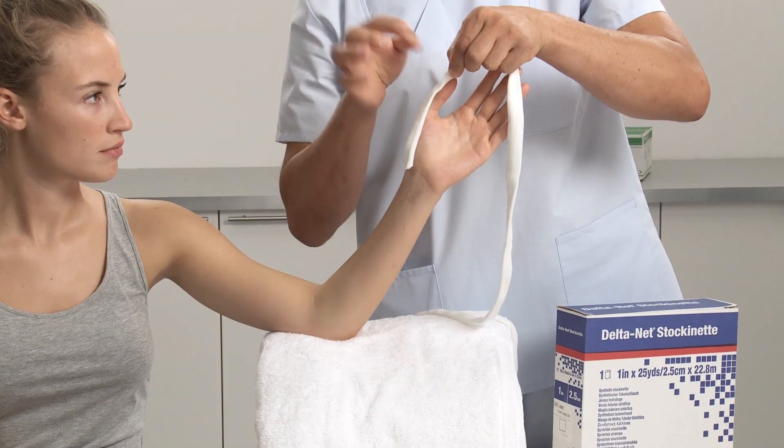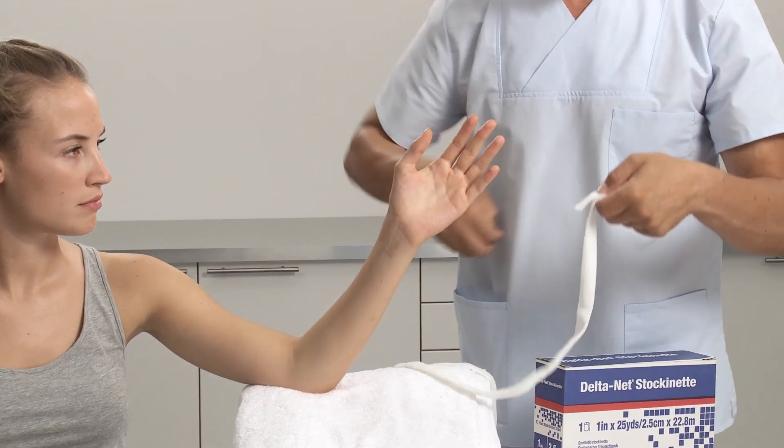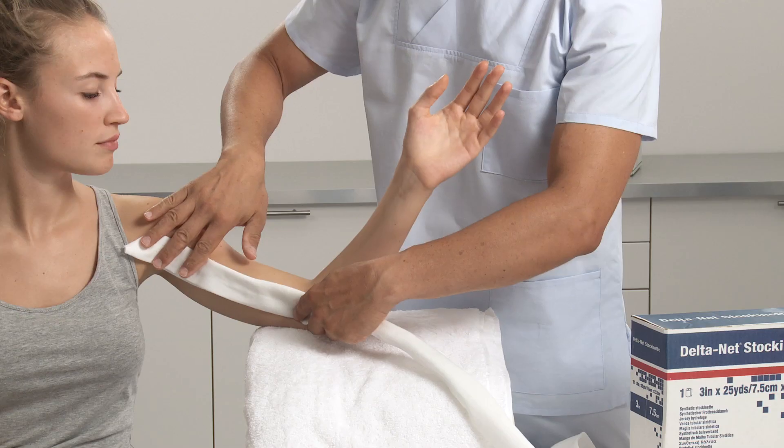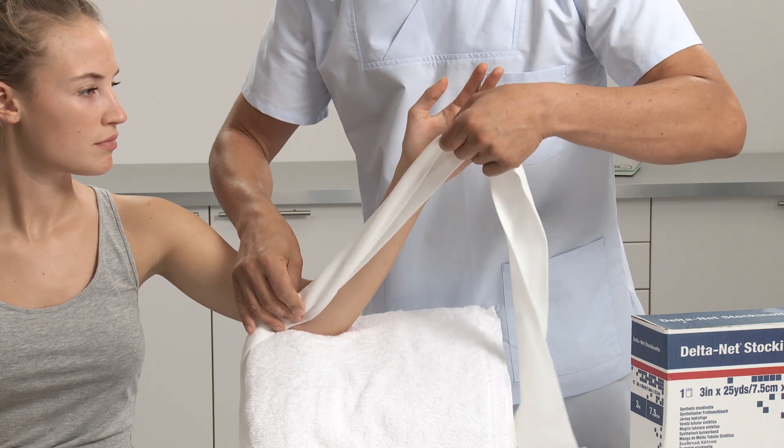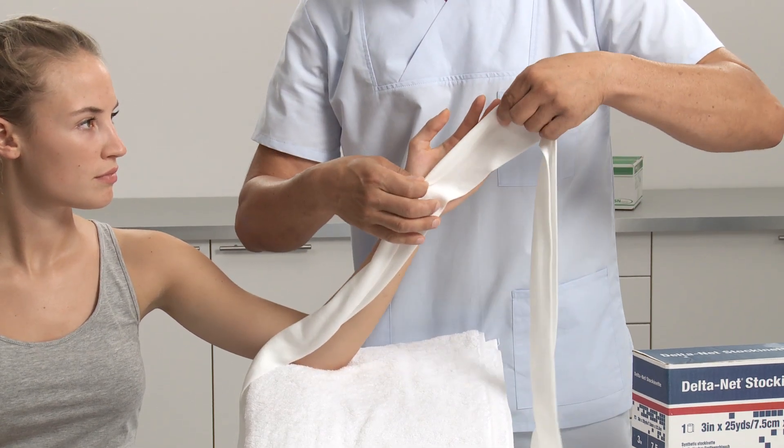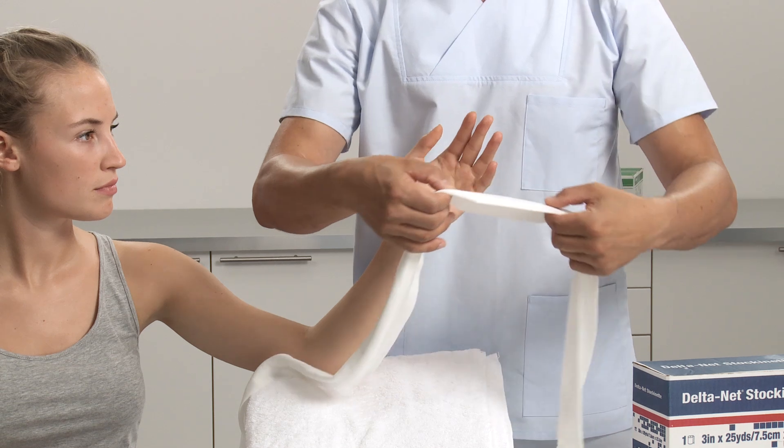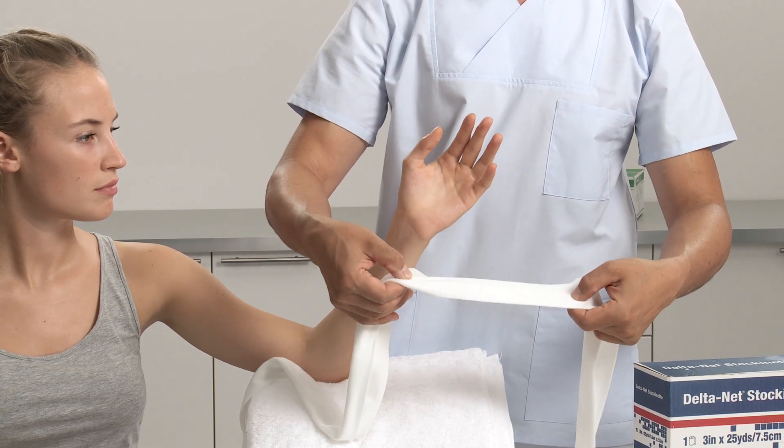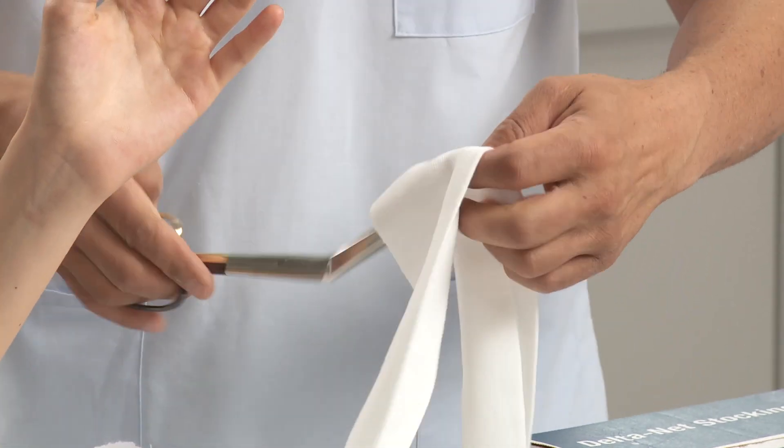Take a double thumb length of 2.5 cm or 1 inch width of stockinette and cut. Then choose the appropriate width of stockinette for the arm. Measure the length from the upper arm to the distal end of the fingers. Add another 20 cm or 8 inches and cut.